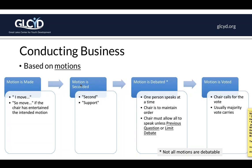Sometimes people get confused when the chair will say "I entertain a motion," thinking that the chair is making the motion. A chair cannot make a motion, so some other member would need to make the motion. Then you would need a second, or "support" as it's sometimes said. Most motions are up for debate, so the chair facilitates one person speaking at a time to maintain order. The chair must allow all people to speak unless someone calls previous question, or debate has been limited by a time limit that has already been voted on. Note: not all motions are debatable.